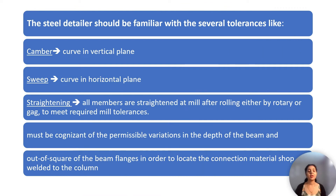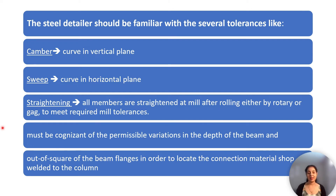A steel detailer must know when to take mill tolerances into account, especially when ordering mill material and drawing connections. He must be familiar with several tolerances: camber — curve in the vertical plane; sweep — curve in the horizontal plane; and straightening — all members are straightened at the mill after rolling, either by rotary or gag methods, to meet required mill tolerances. He must also be aware of permissible variations in depth of beam and out-of-square of beam flanges in order to locate connection material shop-welded to the column.